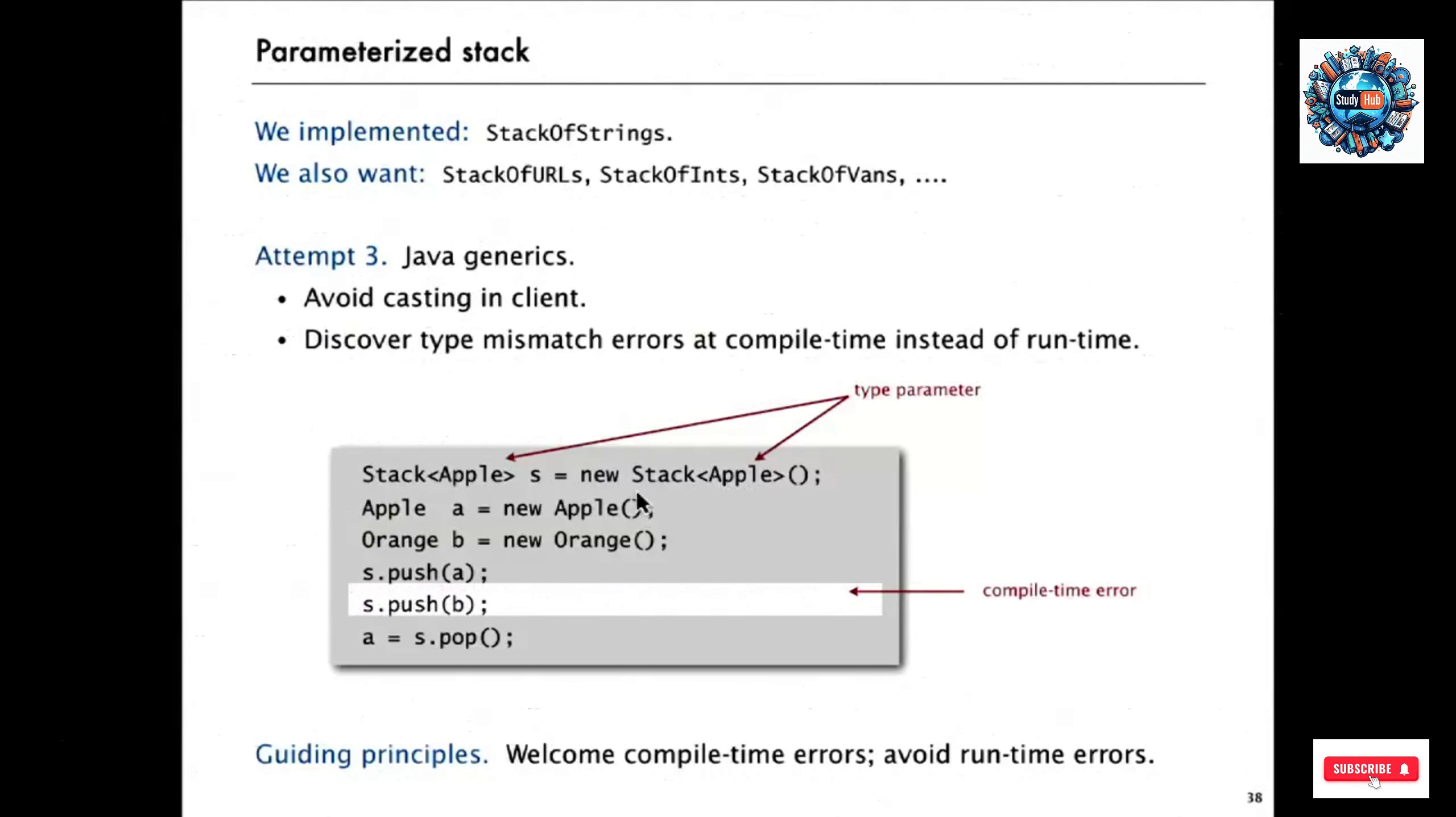If we have a stack of apples and we try to push an orange onto a stack of apples, then we're going to get a compile time error because that stack was declared to only consist of apples. The guiding principle in good modular programming is that we should welcome compile time errors and avoid run time errors.